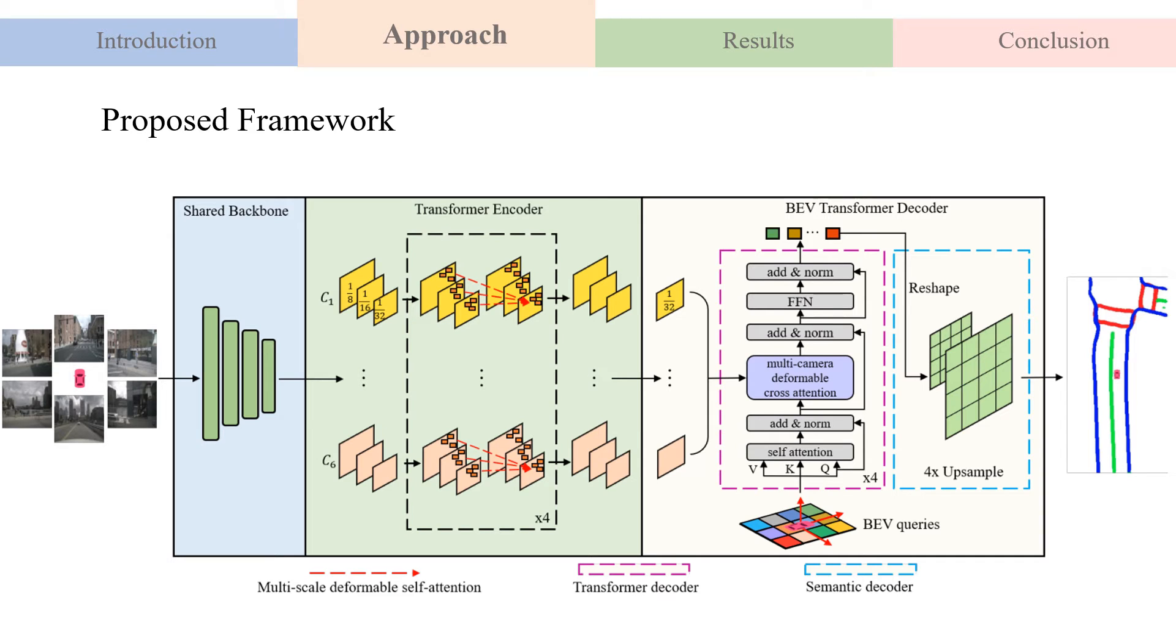Here is the pipeline of the proposed framework: A shared backbone to extract feature maps of arbitrary cameras. The transformer encoder to embed feature maps by a self-attention module. And the BEV transformer decoder to process BEV queries by cross-attention mechanism, and output the final BEV semantic segmentation result.